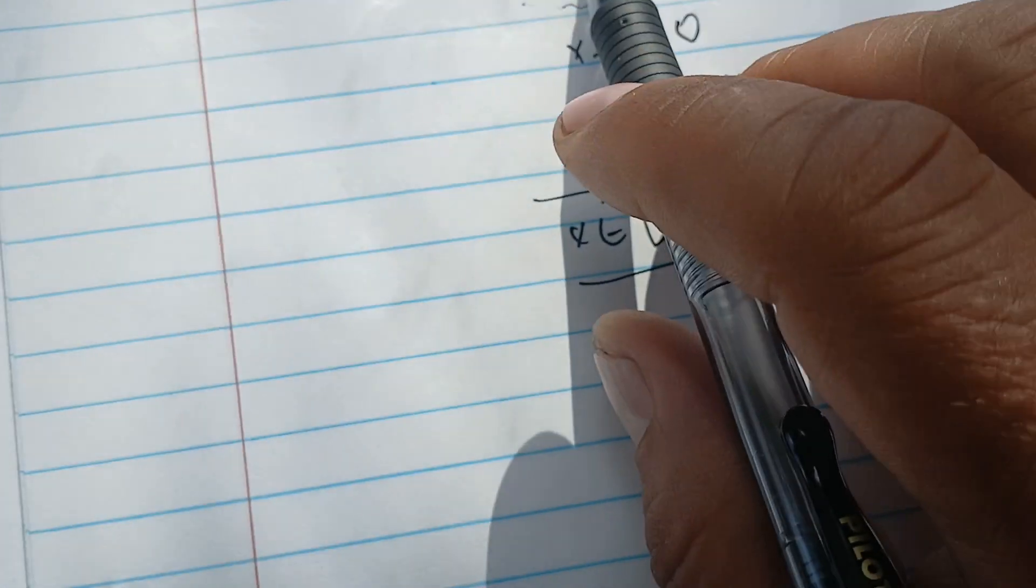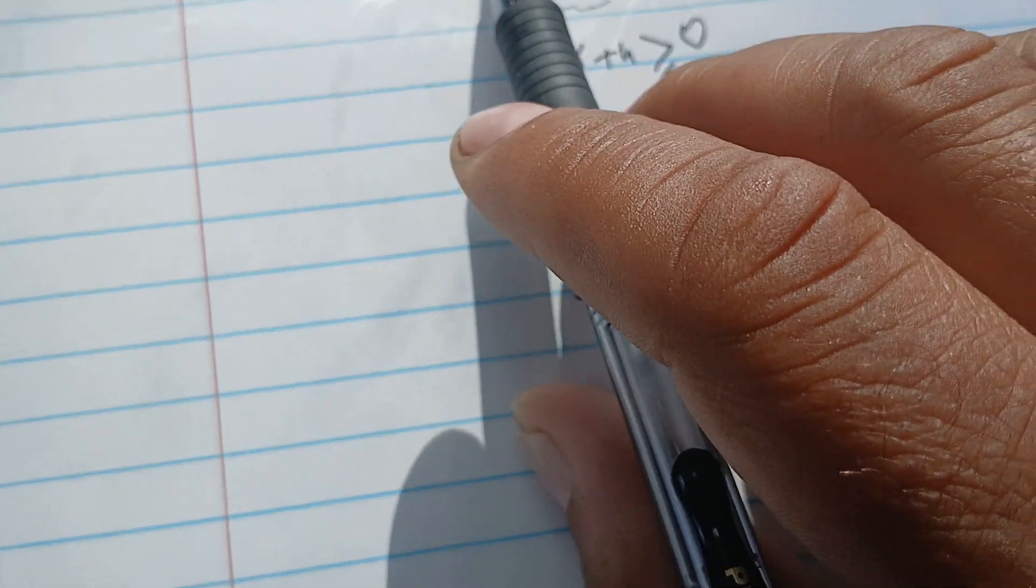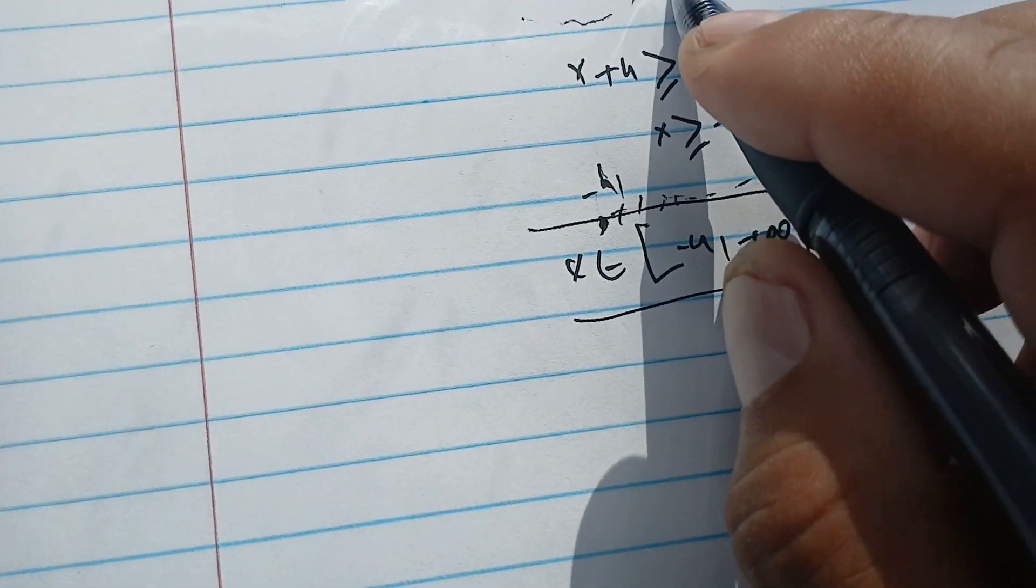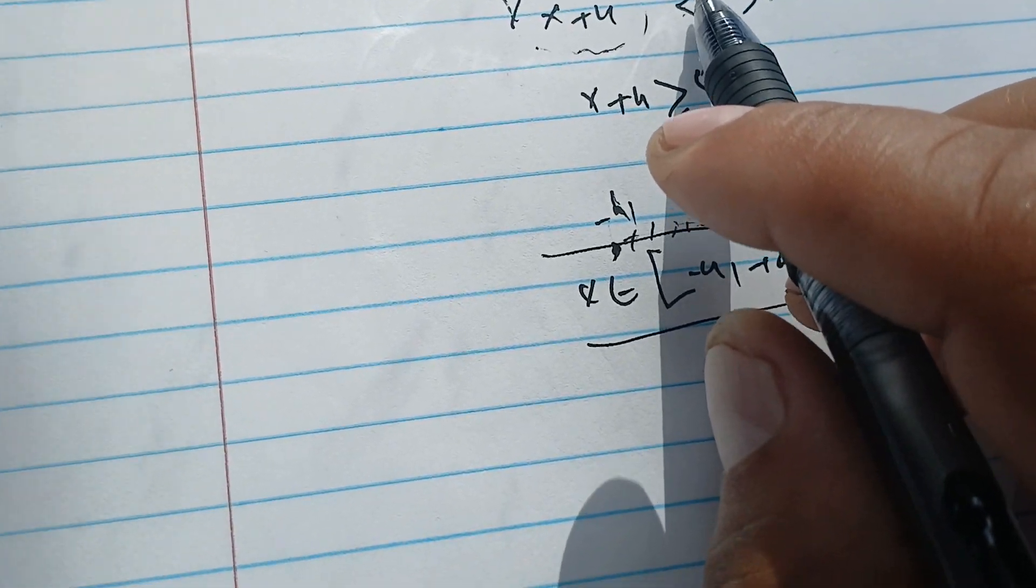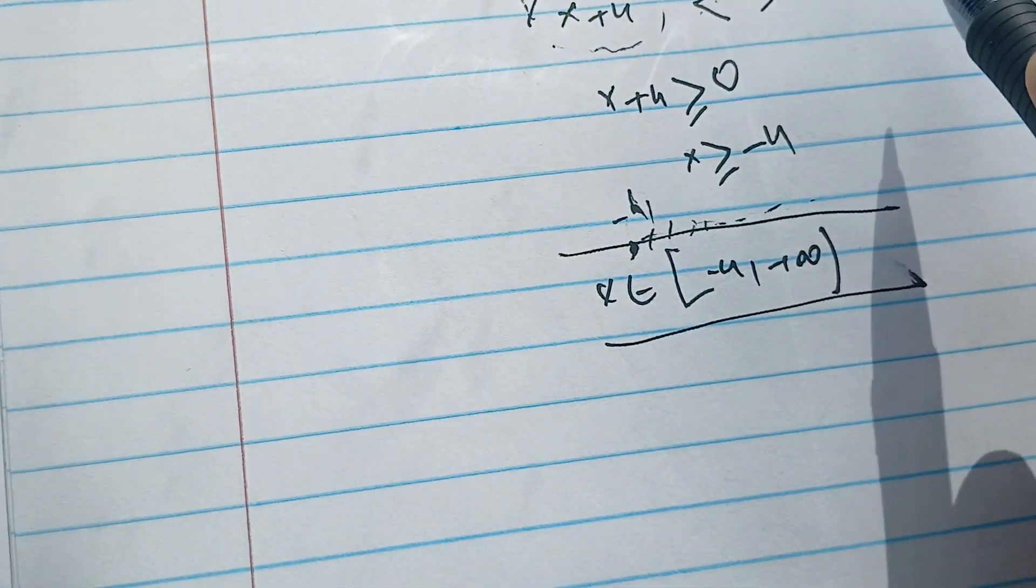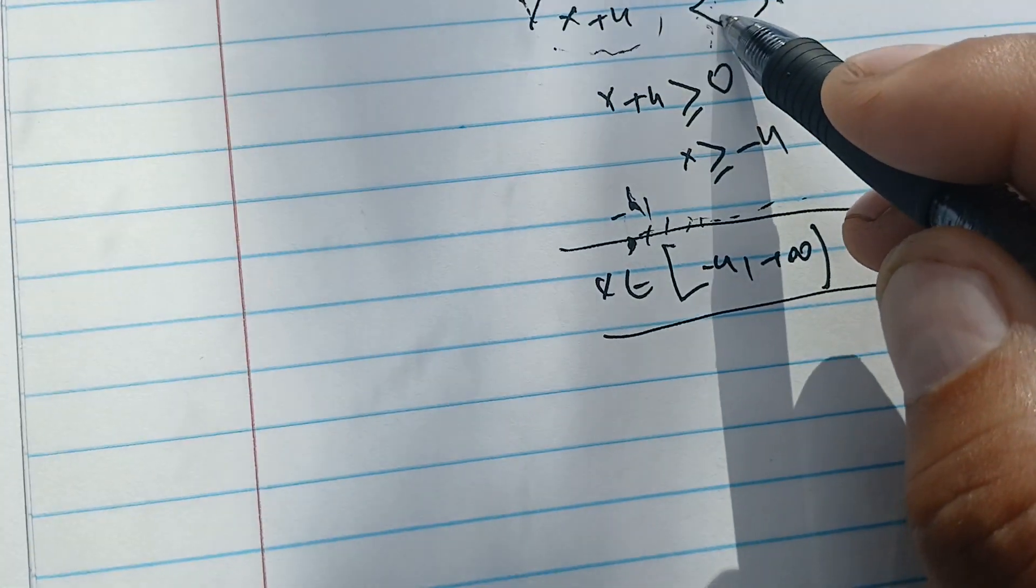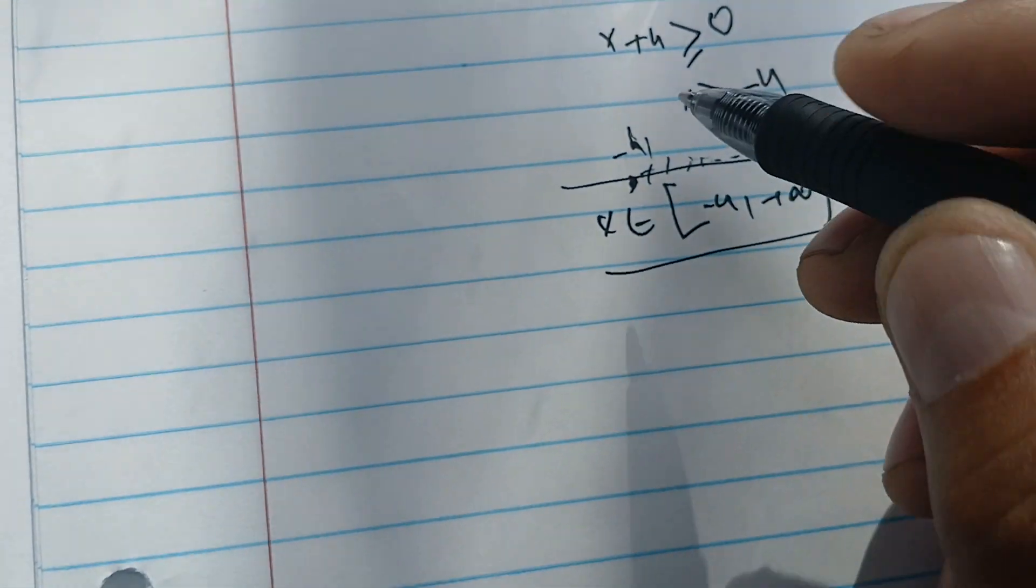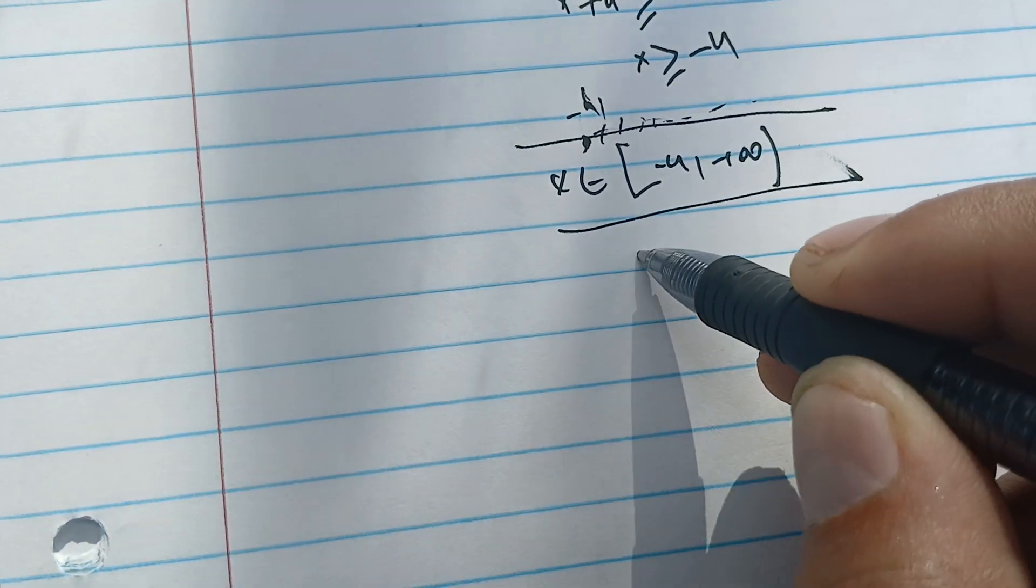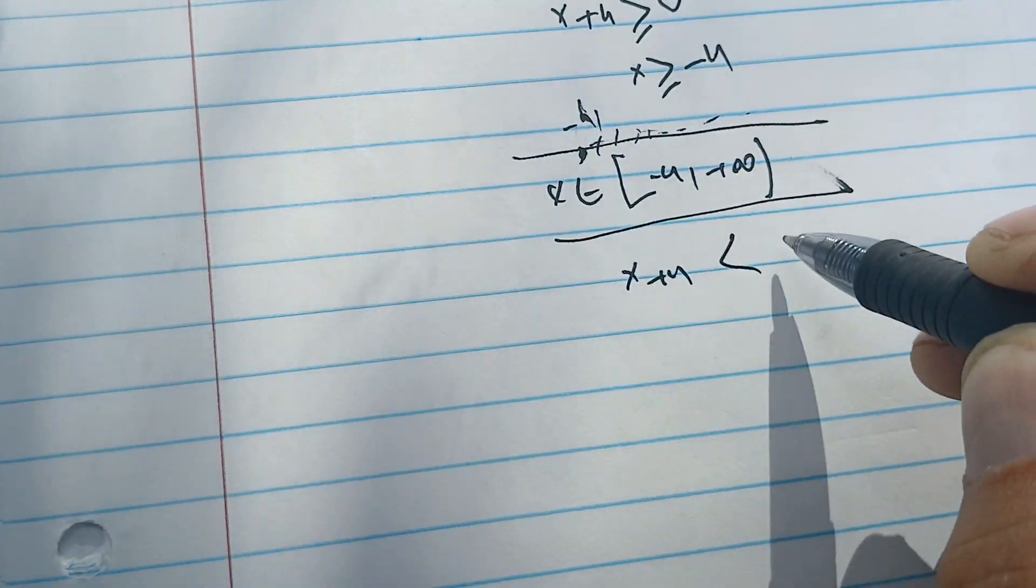Now to solve, we square both sides because we are safe to square here. We square both sides keeping this symbol unchangeable, because the function that we apply, x square, doesn't influence the change of the less than sign.